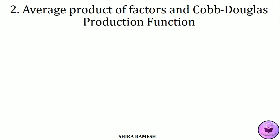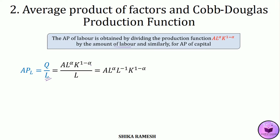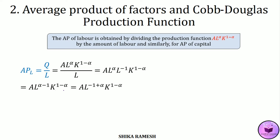The second property is to find out the average product of factors from the Cobb-Douglas production function. The average product of labor is obtained by dividing total output by the number of units of labor: Q/L. Dividing the Cobb-Douglas production function by L, we get AL^α K^(1−α)/L. The L in the denominator is L^1, so bringing it to the numerator gives AL^α · L^(−1) · K^(1−α), which solves to AL^(α−1) K^(1−α).